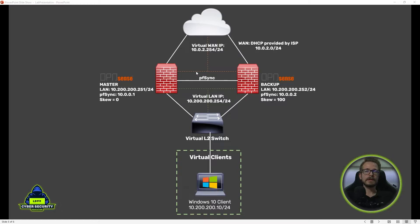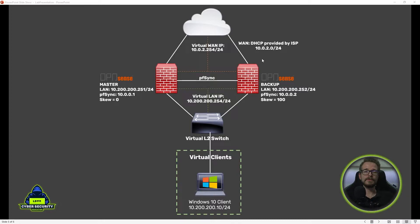We're going to be building this network that you can see over here. We will need to have a master OPNsense firewall, which will be our main firewall, and we will have a secondary backup firewall. Both firewalls will be connected to this virtual Layer 2 switch — our LAN where virtual clients connect to the Windows 10 machine. We've simulated a WAN connection where VirtualBox provides DHCP and assigns WAN IP addresses to each firewall.